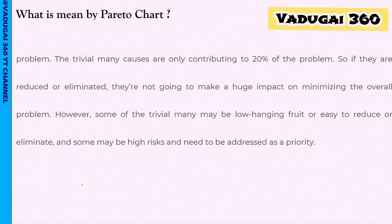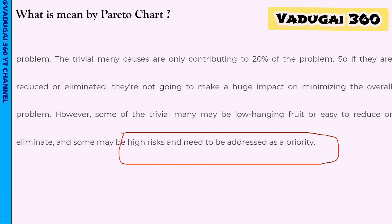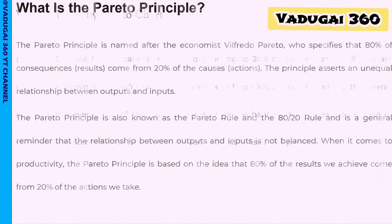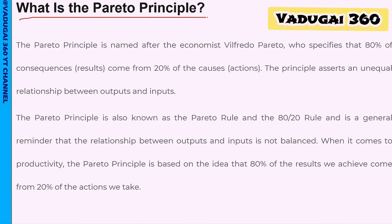The Pareto chart is based on the 80-20 principle using the X-Y axis. High risk variables need to be addressed as a priority. The Pareto principle asserts an unequal relationship between input and output.